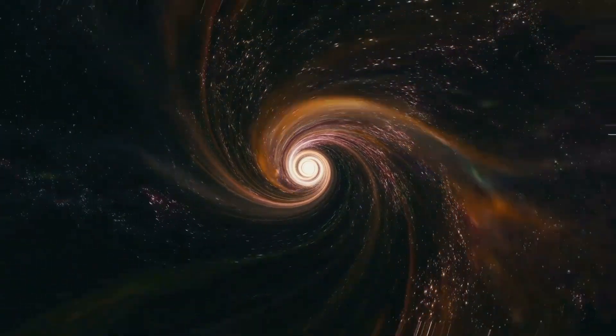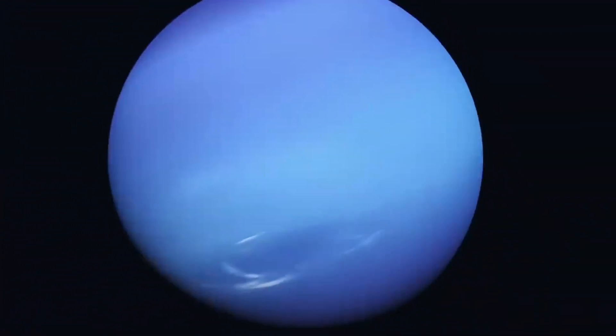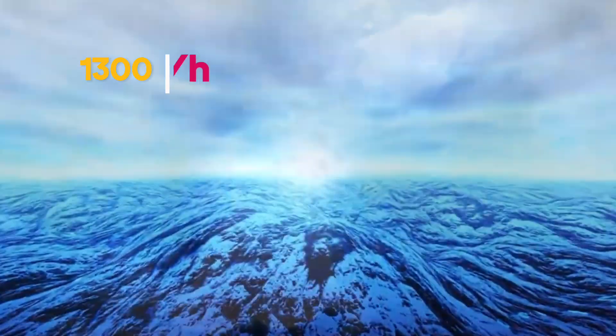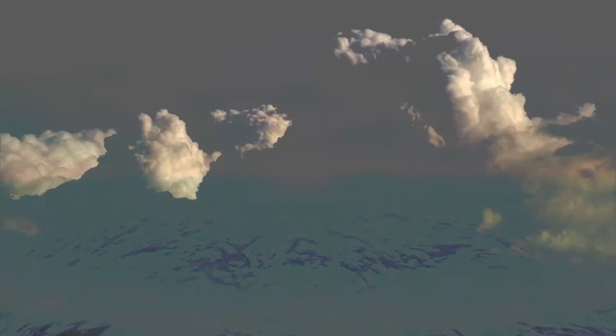But Neptune is more than just a pretty face. It boasts some of the most ferocious winds in the solar system, clocking in at speeds of up to 1,300 miles per hour. These tempestuous winds create a dynamic and ever-changing atmosphere, showcasing the planet's wild nature.